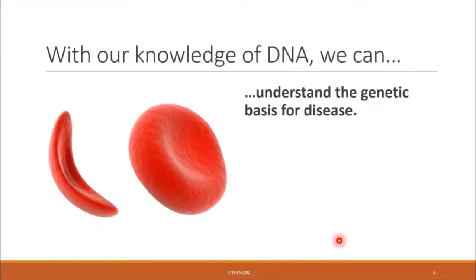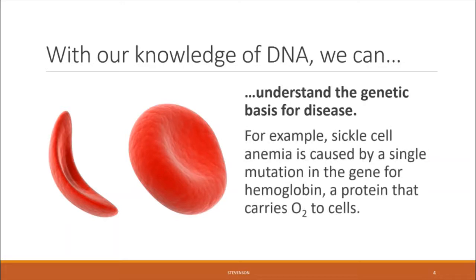Because we know the structure of DNA, we are now able to understand the genetic basis for diseases that are passed down or caused by mutations. For example, sickle cell anemia is a disease that we talked about in our last lecture, which is caused by a single mutation in the gene for making the protein hemoglobin, responsible for carrying oxygen to all of the tissues of your body inside red blood cells. We know this because we understand that changing the structure of this particular part of your DNA can result in a mutation that sickles the shape of the red blood cells.